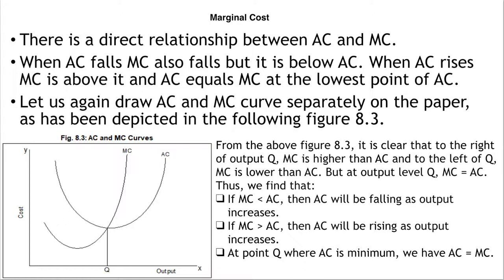There is a direct relationship between AC and MC. When AC falls, MC also falls but remains below average cost. When average cost rises, marginal cost is above it. Average cost equals marginal cost at the lowest point of average cost. From Figure 8.3, to the right of output Q, MC is higher than AC; to the left of Q, MC is lower than AC; but at output level Q, MC equals AC. Thus, if MC is less than AC, AC is falling; if MC is greater than AC, AC is rising; and at point Q where AC is minimum, AC equals MC.